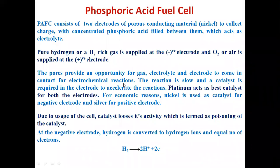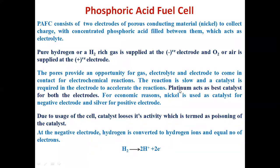The pores provide an opportunity for gas, electrolyte, and electrode to come in contact for electrochemical reactions. The reaction is slow and a catalyst is required in the electrode to accelerate it. The ideal catalyst is platinum, but since its cost is very high, nickel is chosen. Platinum acts as the best catalyst for both electrodes. For economic reasons, nickel is used as catalyst for the negative electrode and silver for the positive electrode.